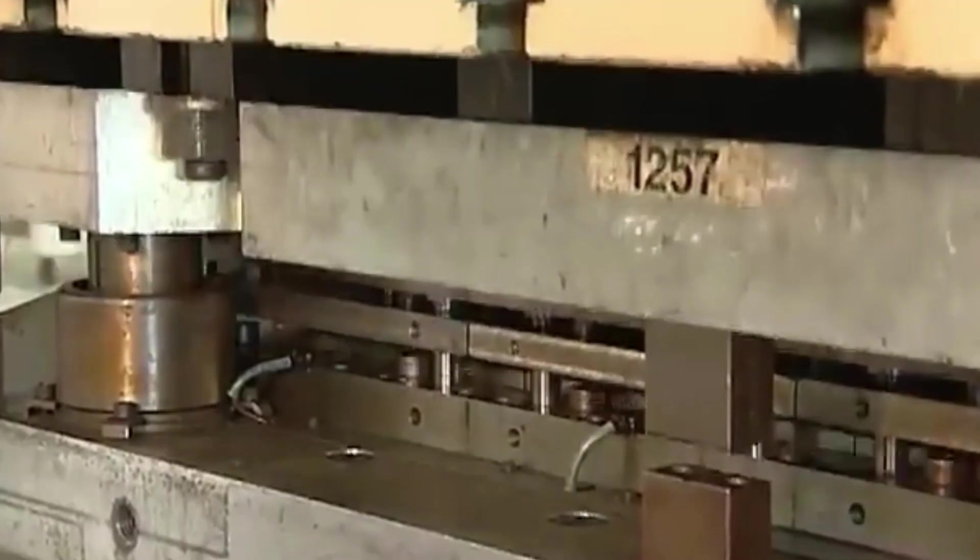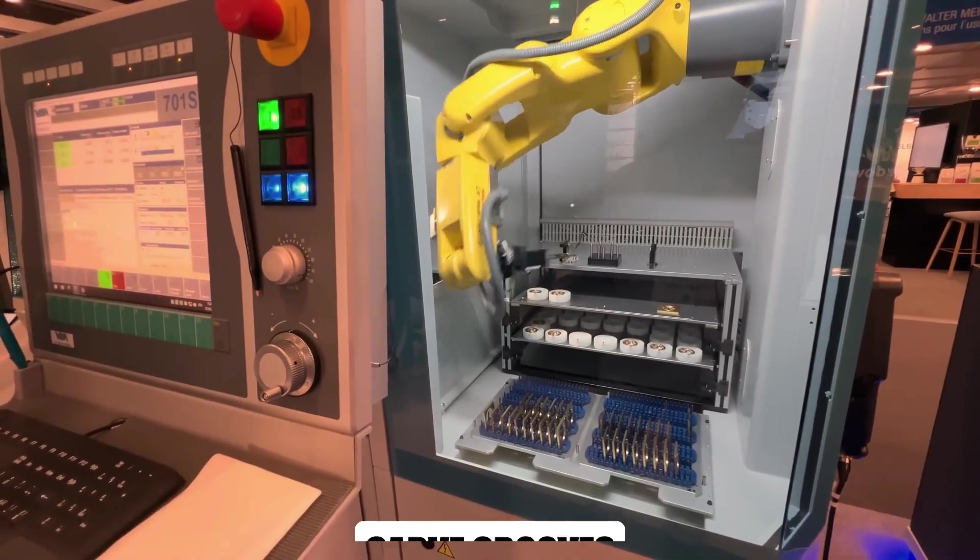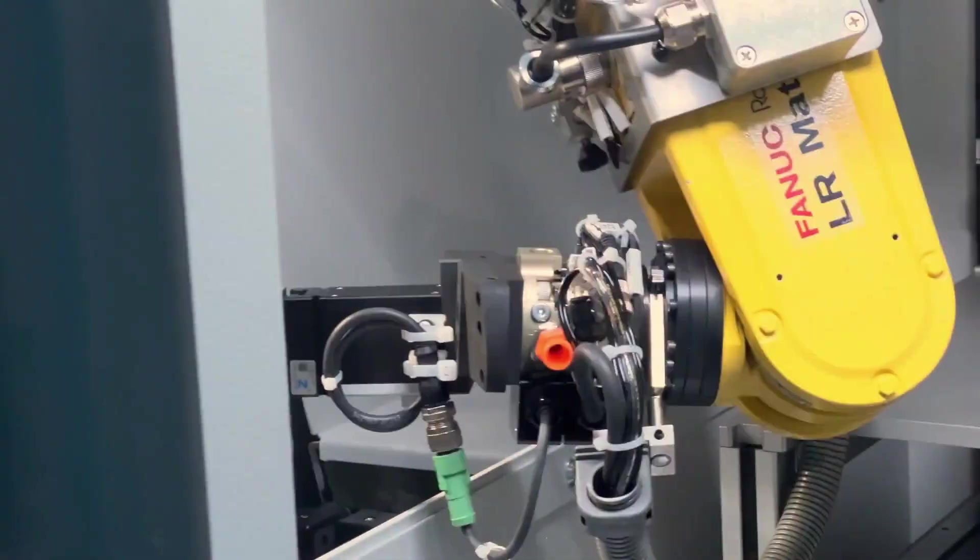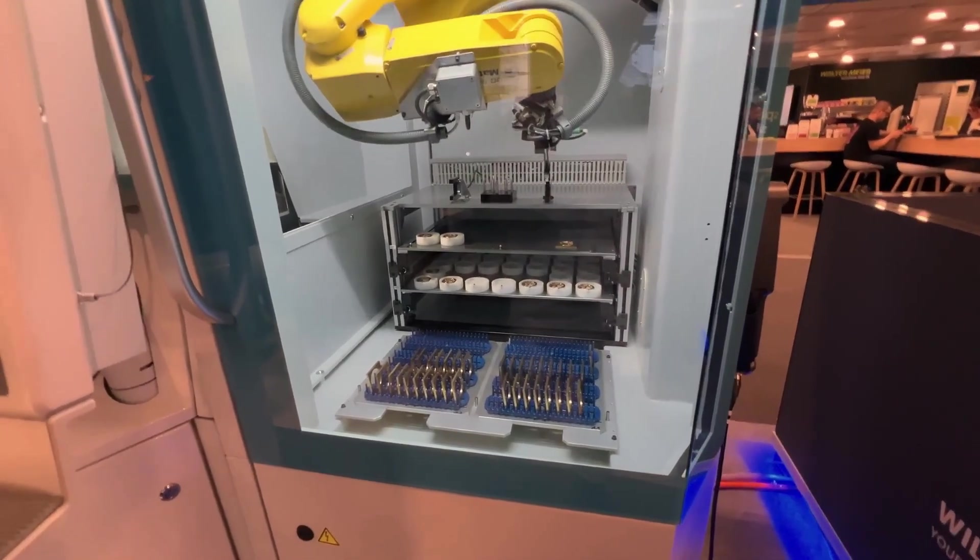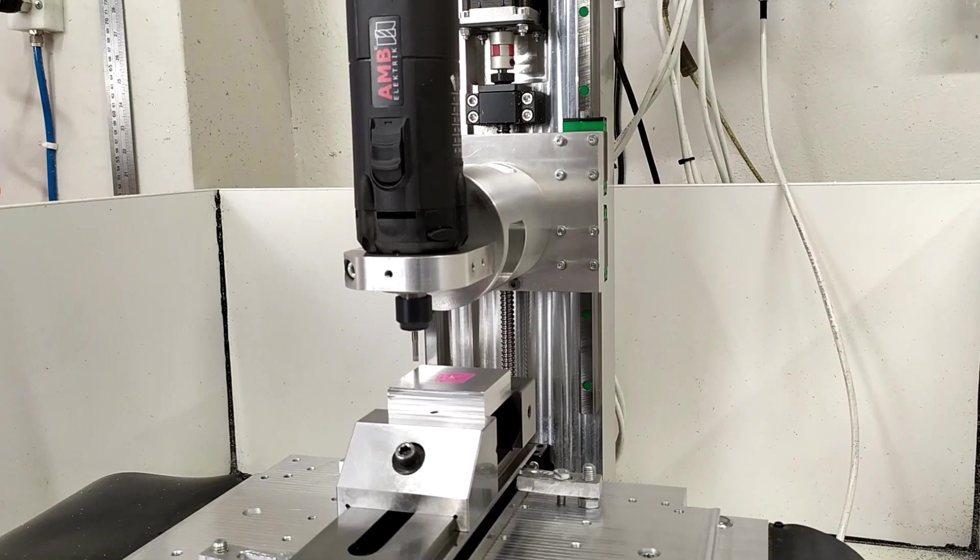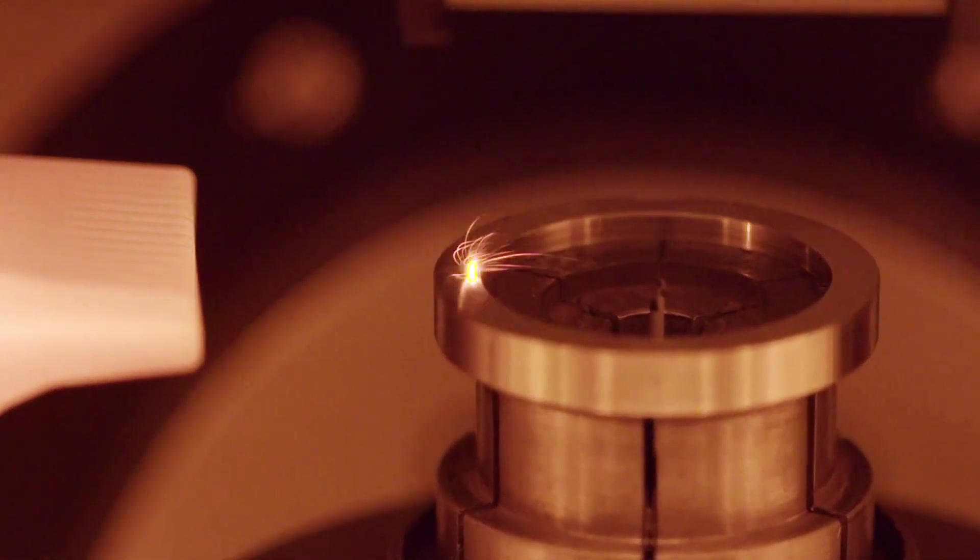But strength without accuracy means nothing. Enter precision CNC machining. These robotic cutters carve grooves, mill edges, and hollow cavities with measurements so exact, even a human hair looks enormous by comparison. Tolerances are measured in microns, ensuring a seamless fit for every future component. Finally, lasers cut where traditional tools would falter, engraving reference points, drilling invisible holes, and etching designs that machines alone could never replicate.